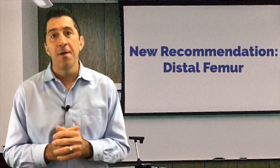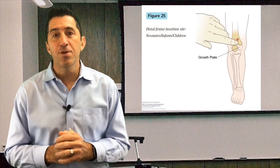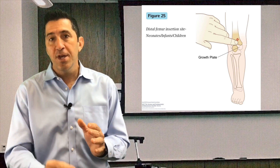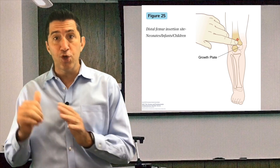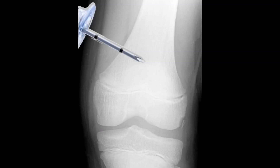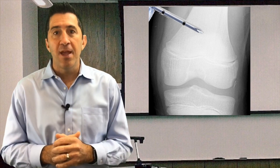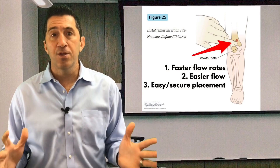So what we recommend and what we convert to is the distal femur IO. The distal femur is a beautiful bone because it's really large, and where you're going to be going is 2 centimeters above that tuberosity on the medial aspect of the femur. You can see in this image that that bone is fully calcified — it's big, and once you get into it, it's solid. You almost don't even have to anchor it down. The femoral IO gives you faster rates, easier flow, and it's really an easy place to put that IO.